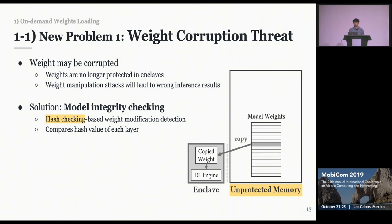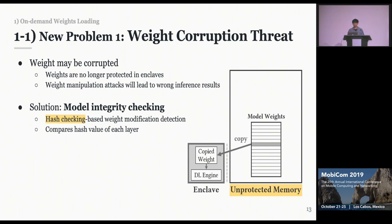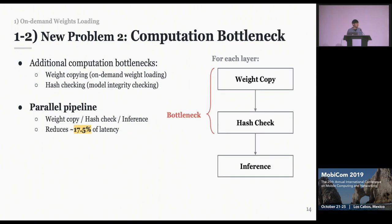However, such a design brings new problems. The first problem is that the model weights might be corrupted. Because we located the model weights in unprotected memory, they are no longer protected by the enclaves. Weight manipulation attacks may lead to wrong inference results. As a solution, we added a model integrity checking module — a hash-checking-based weight modification detection module. During runtime, it compares the hash value of each layer with pre-computed values. The second problem is additional computation bottlenecks from weight copying and hash checking. We apply a parallel pipeline, so our system runs weight copy, hash check, and inference in different threads, reducing 17.5% of the latency.